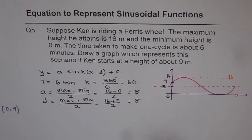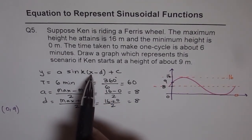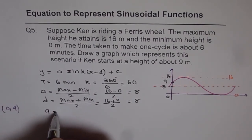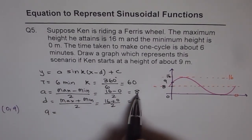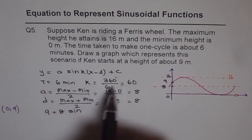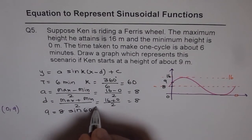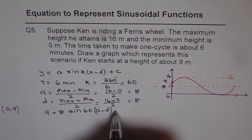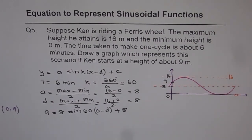So at x equals 0, y is 9. We can write this equation as 9 equals a we know is 8, sine of k is known to us as 60, x we are writing 0, minus d plus c is 8. So that is what we get. If we solve this equation, we can find d.